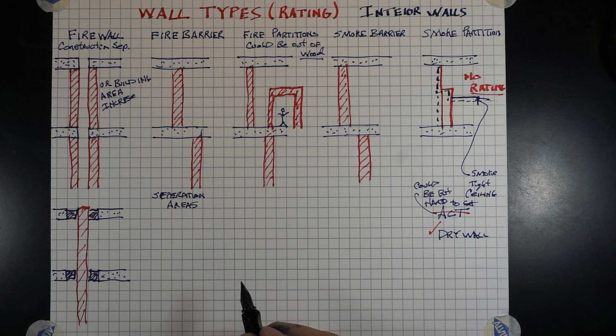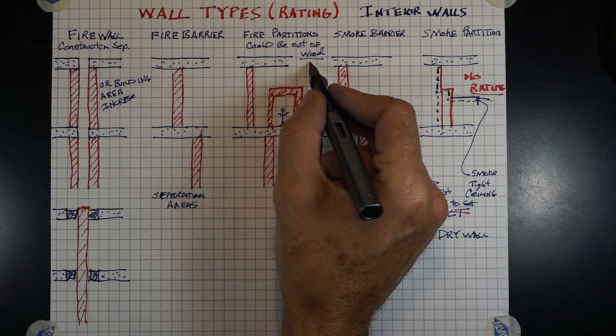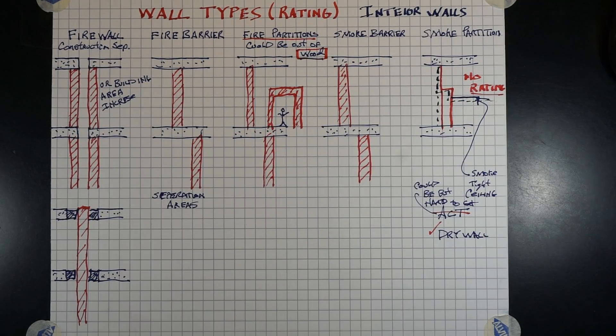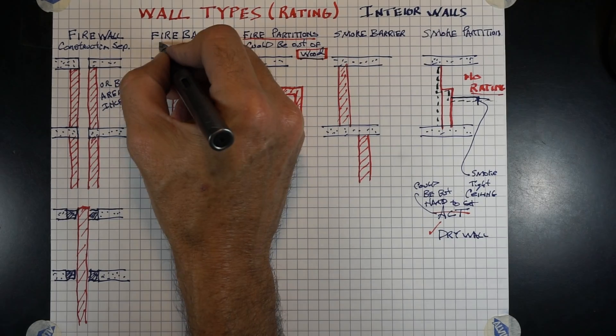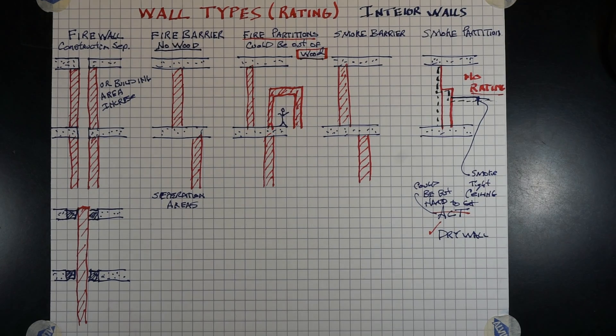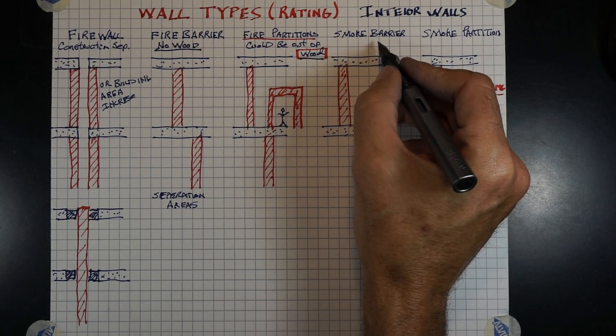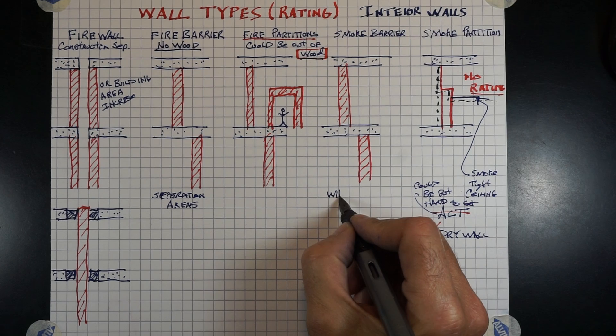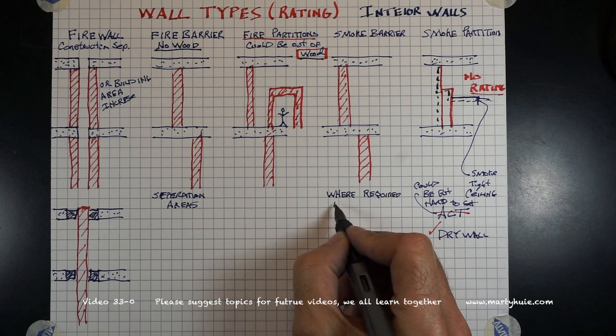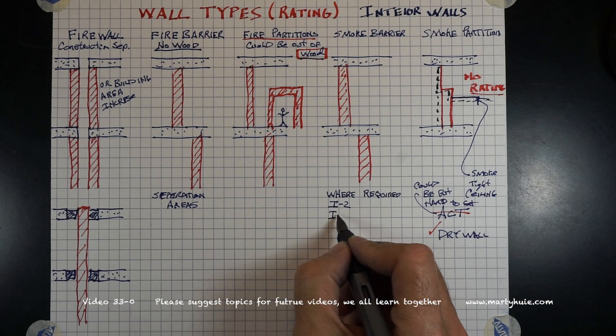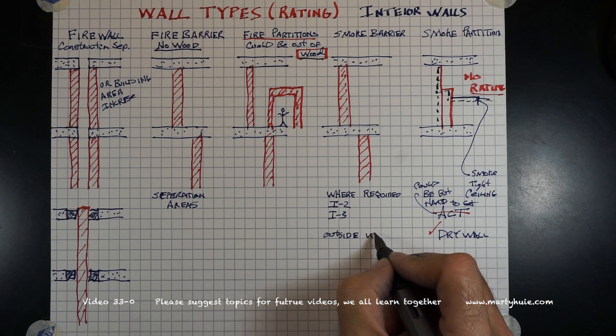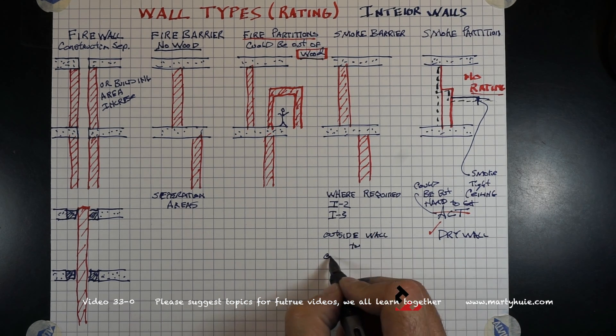Fire partition can be used for the same thing a fire barrier is used, but it's allowed to use wood, i.e. combustible material. In the previous two videos on smoke compartments, a smoke barrier is used in I2, I3, and B ambulatory type buildings. It can be used in other types, but very rarely, and it's only where it's called out it should be used. A smoke barrier typically should go from outside wall to outside wall.